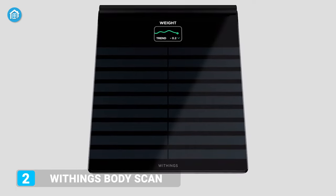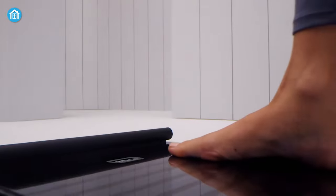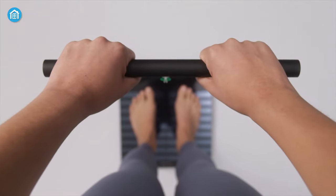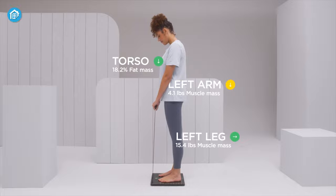Withings Body Scan notifies you about the current status of your body whenever you put your legs on it. It will also tell you your total body fat mass with different percentages for arms, legs, torso and so on within your vascular age.